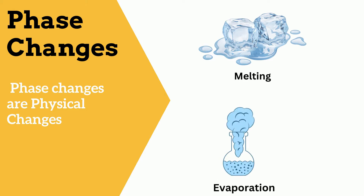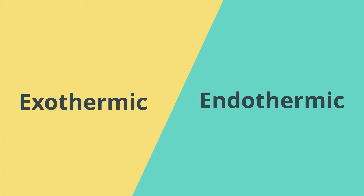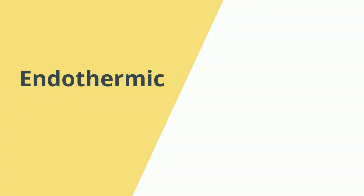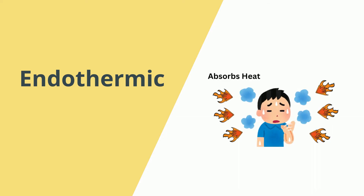Phase changes can be either endothermic or exothermic. An endothermic phase change is a phase change that absorbs heat from the surroundings. This means that the temperature of the surroundings will decrease as the substance undergoes the phase change.